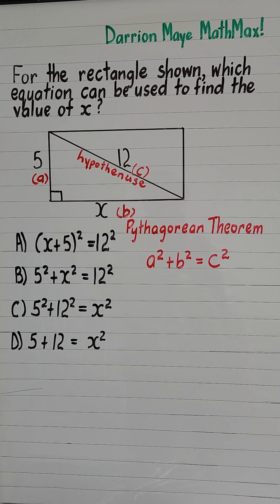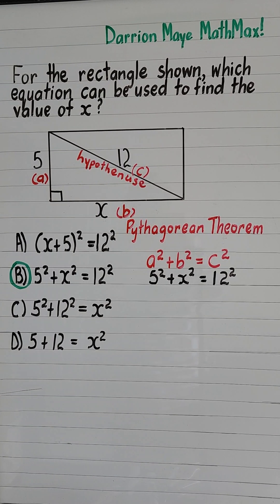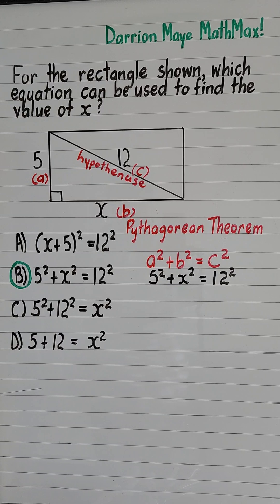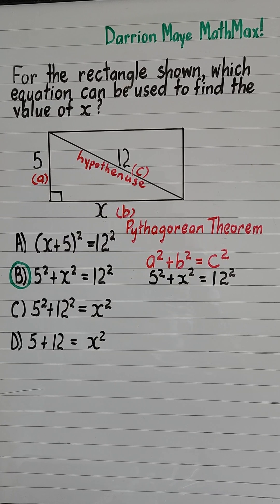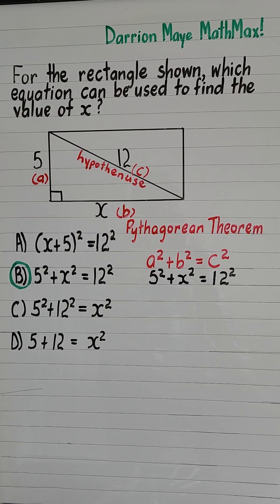The theorem states that the sum of the squares on the arms of the triangle is equal to the square of the hypotenuse. The equation is 5² + x² = 12², and our correct choice is B.